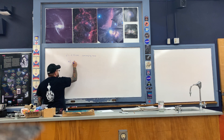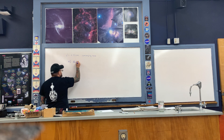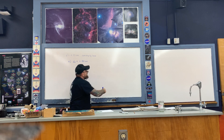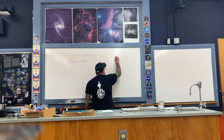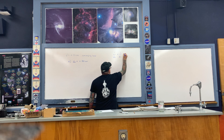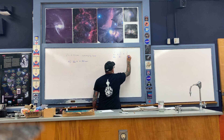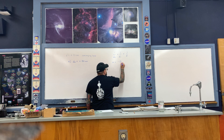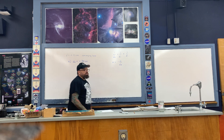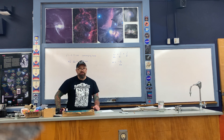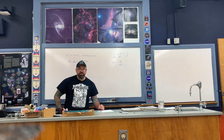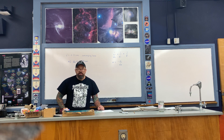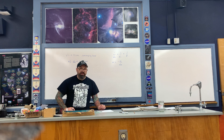In part a of the problem, the object distance is positive 20 centimeters. We're going to use the lens equation to first find the image distance, and then we'll use the magnification expression as well. In doing so, we'll learn how the sign convention works associated with these expressions for lenses, and we'll also draw the situations using shortcuts.